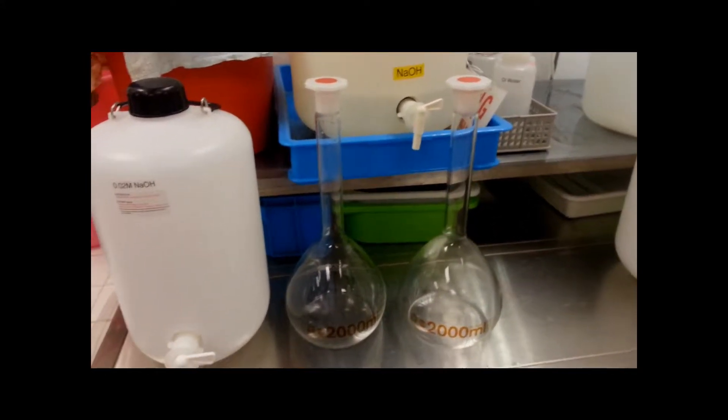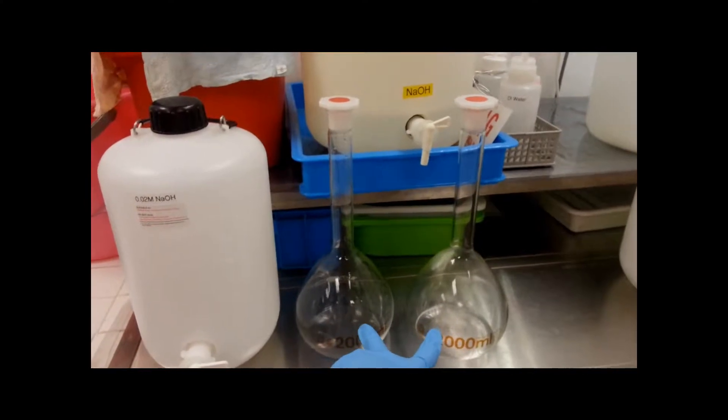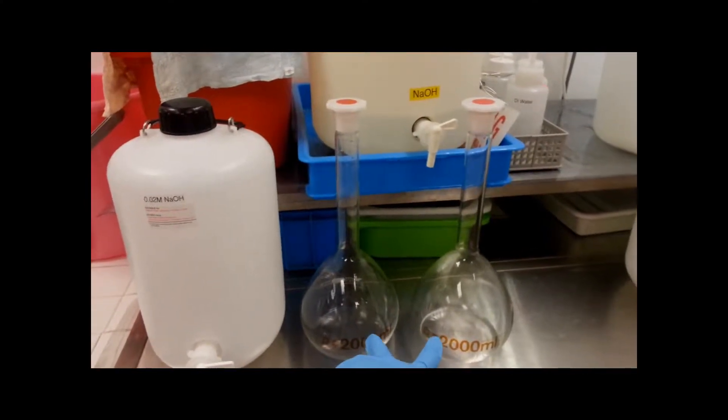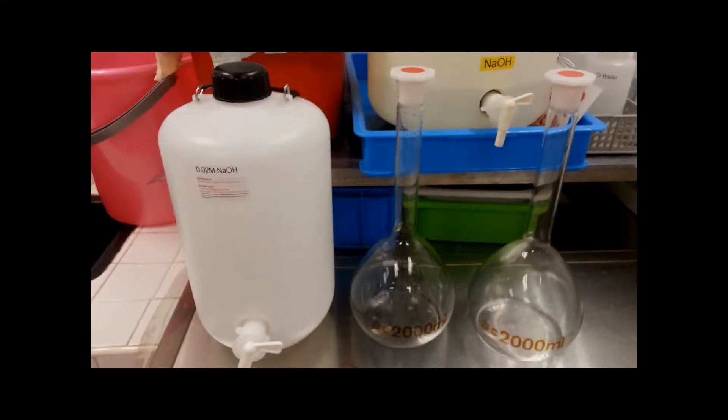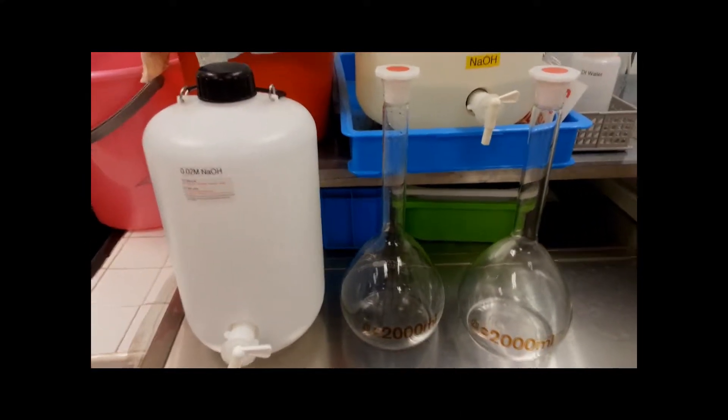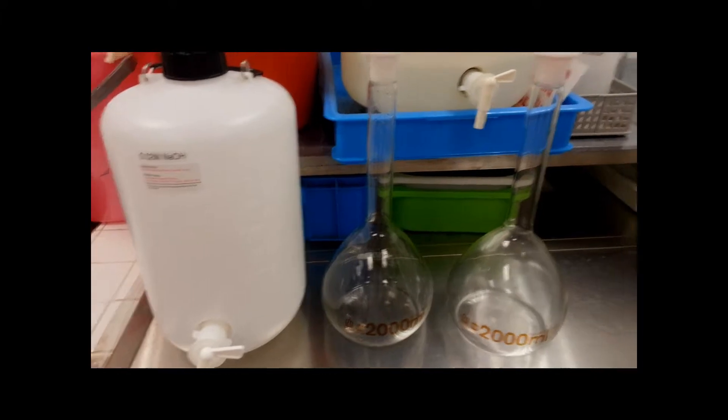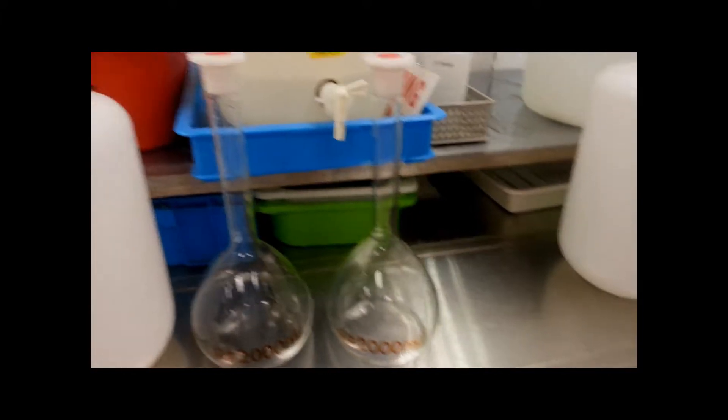To prepare 4 liters of solution, it is necessary to split it into 2 different runs. Therefore, 400 ml of 0.1 molar NaOH is added into the round bottom flask and you top it up to 2 liters using distilled water.